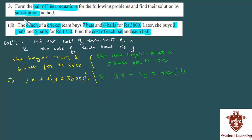How do you solve both equations using substitution method? This is your second equation. I will write y in terms of x. From this equation, 5y equals 1750 minus 3x, which will give us y as (1750 minus 3x) over 5.